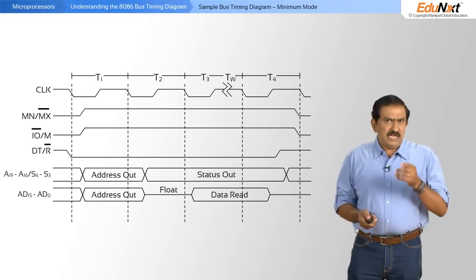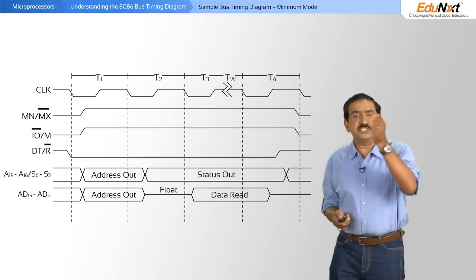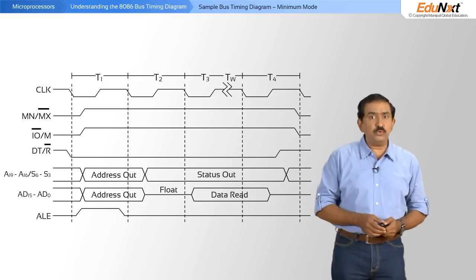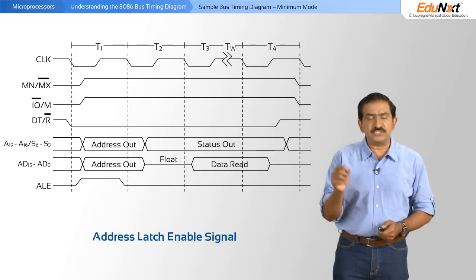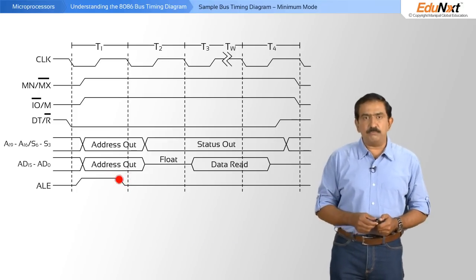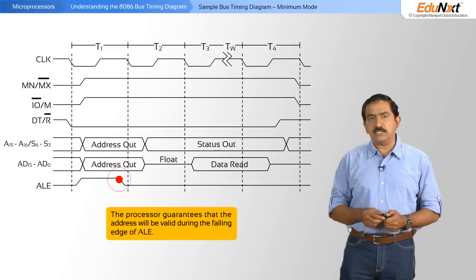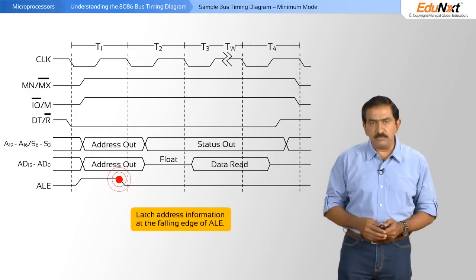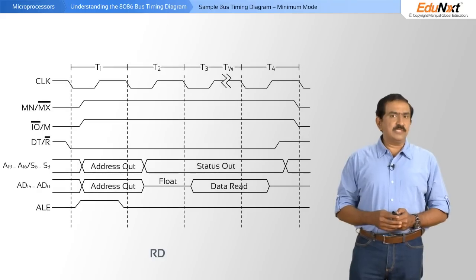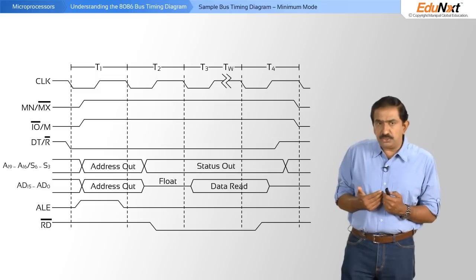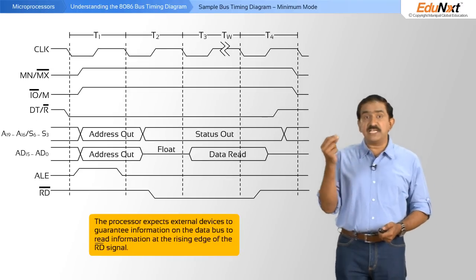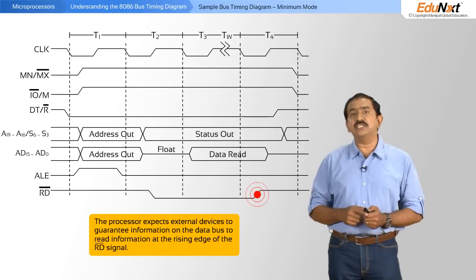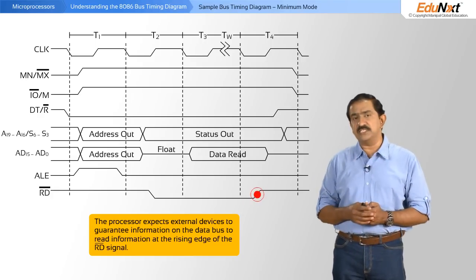When you want to latch the address lines, because the address lines are going to change their meaning, you as a designer need to latch them at the appropriate time. The processor is very helpful by providing the ALE signal — Address Latch Enable. At the falling edge of ALE, the processor guarantees that the address bus contains valid address information, and it is your responsibility as the system designer to latch address information at the falling edge of ALE. Then there is the read bar — the processor is now reading information from memory, and expects external devices to guarantee that information is ready on the data bus at the rising edge of the read bar signal.